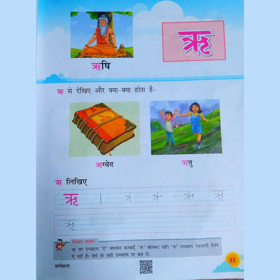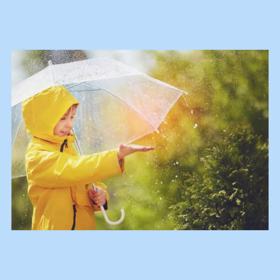What is the third picture? Ritu. That means season. Which is the season now? It is rainy season. Be safe in your home. Don't go and play in the rain. Take care.